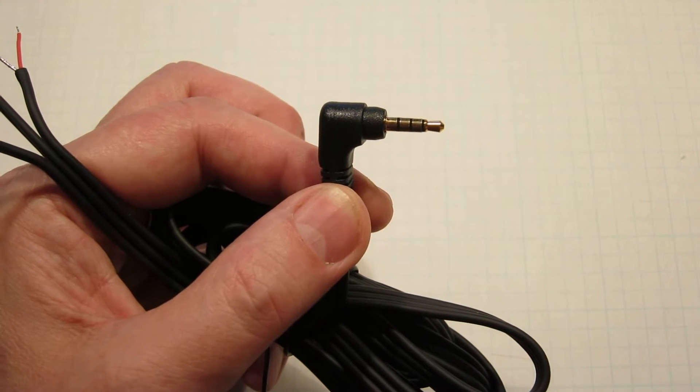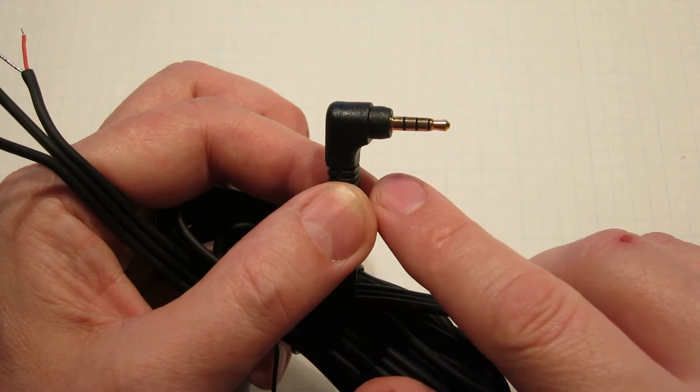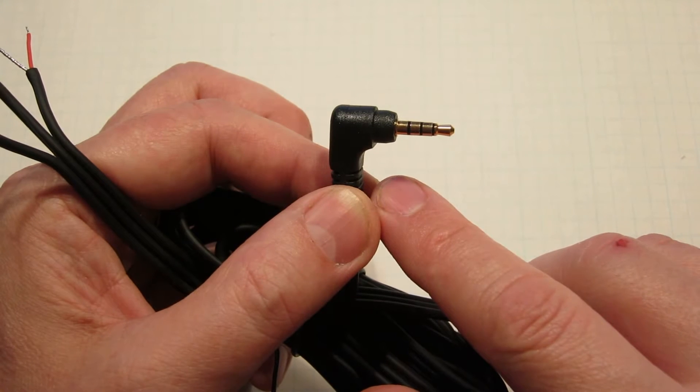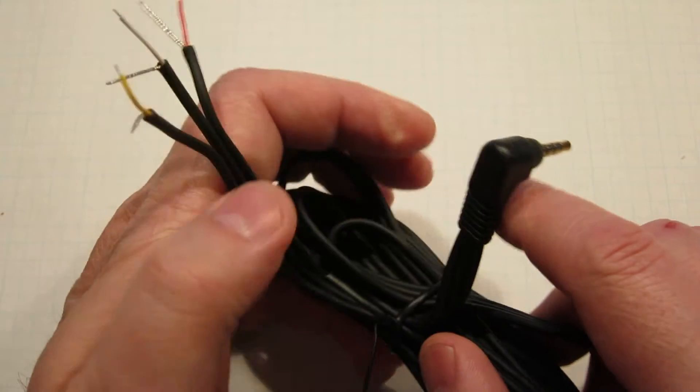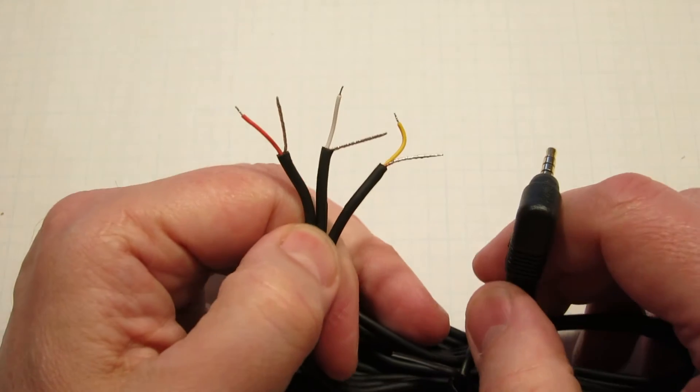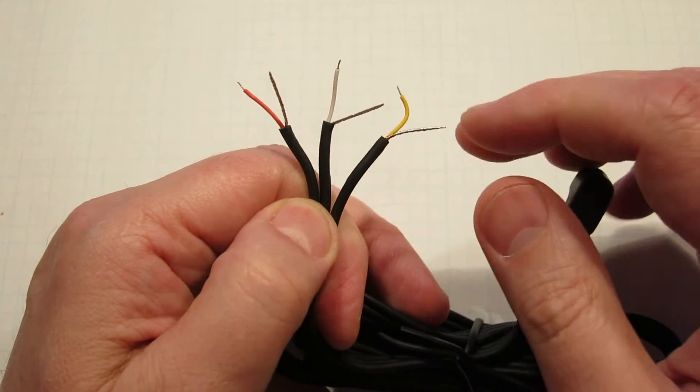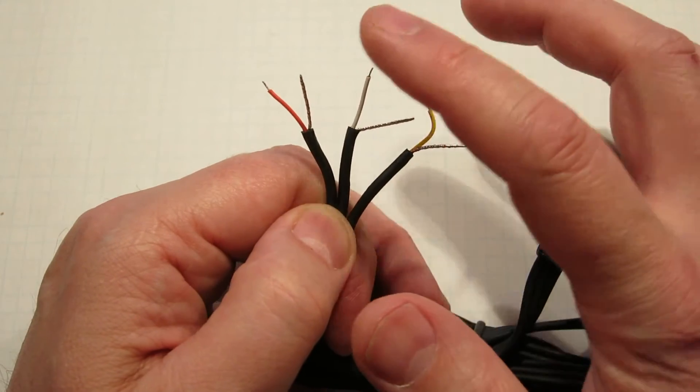The cable has a 3.5 millimeter TRRS 4 conductor plug on it and it's terminated with just wires: a yellow wire, a white wire, and a red wire.